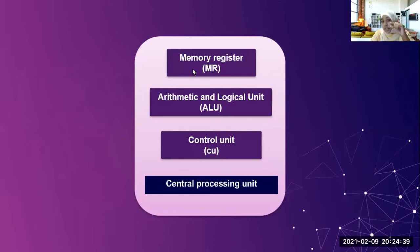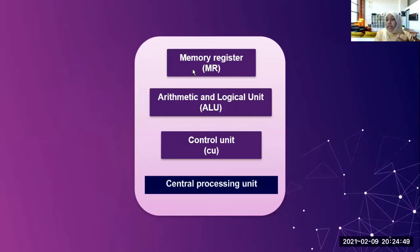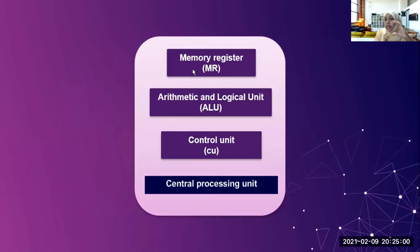There are three things in this CPU: one is the memory register, another is the arithmetic and logical unit, and the third is the control unit. When these three combine together, we call it the CPU.